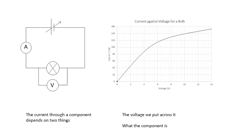The current through a component depends on two things. It depends on what voltage we put across it — generally, the bigger the voltage across a component, the bigger the current through it. If anybody says 'the voltage through a component,' they don't understand electricity. It's the potential difference across the component; the current flows through it. It also depends on the resistance of the component.